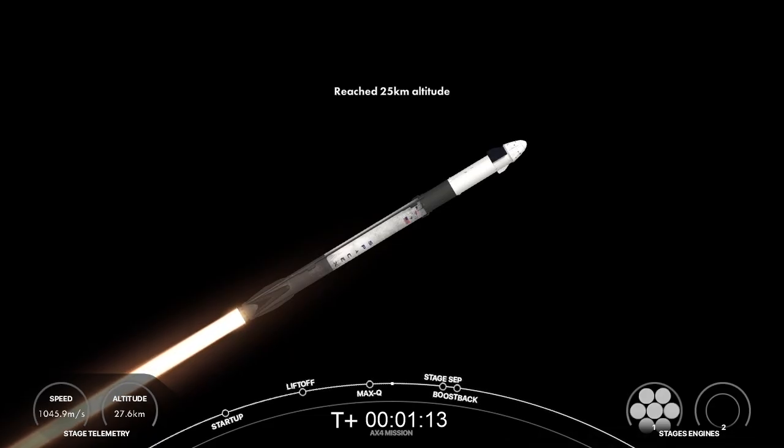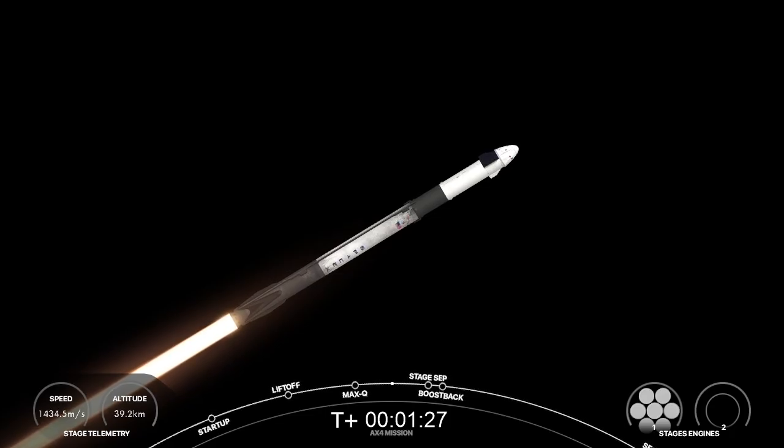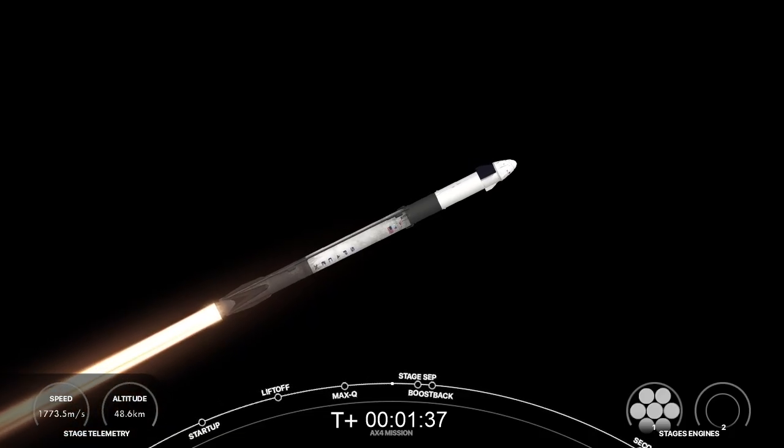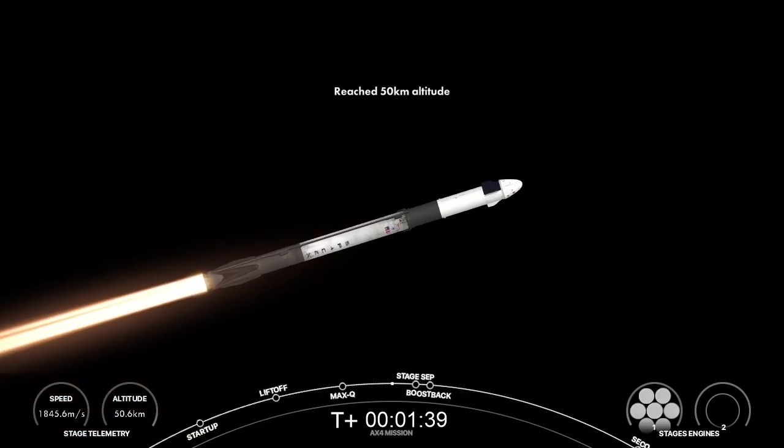Each of these are a specific phase where if for any reason we had an in-flight abort, Dragon would abort to a safe location. So we're going to call out each of those milestones as we pass through them. We also just heard the call out for MVAC chill. We're going to trickle just a little bit of liquid oxygen now into the turbo pumps on board our Merlin vacuum engine on stage two, in preparation for second engine start.